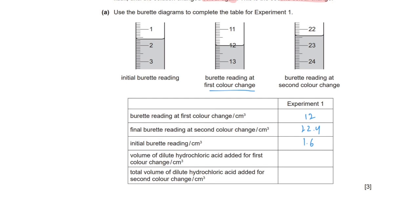The volume of dilute hydrochloric acid added for the first color change is the burette reading at first color change minus the initial reading: 12 minus 1.6 equals 10.4 cm³. The total volume of hydrochloric acid added for the second color change is the final burette reading minus the initial burette reading: 22.4 minus 1.6 equals 20.8 cm³.